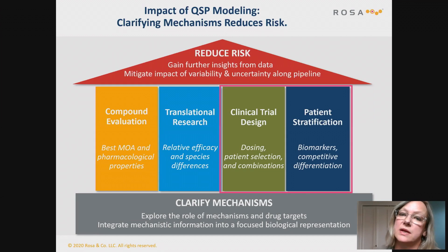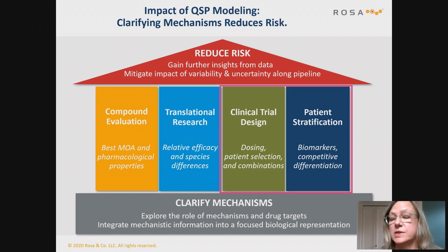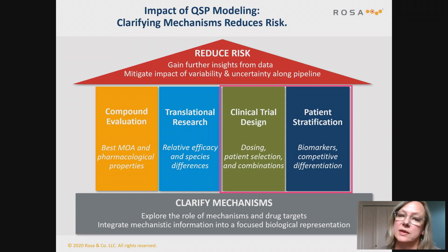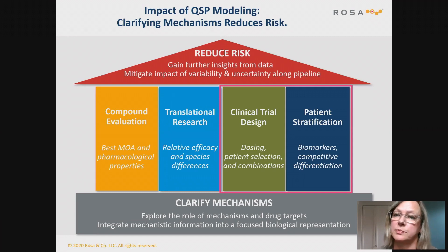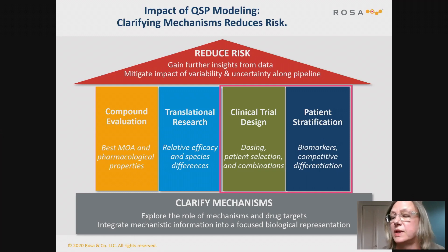For the geriatric applications we're talking about, what's of particular interest is the utility of QSP in supporting different clinical trial designs. Perhaps you would make different dosing decisions for the geriatric population, or explicitly look at combinations with drugs they're already on, or address comorbidities. The patient stratification aspect is also really important — as we saw earlier, there is a huge amount of variability among the geriatric population. Building different virtual patients representing different subtypes of geriatric patients would be incredibly informative.